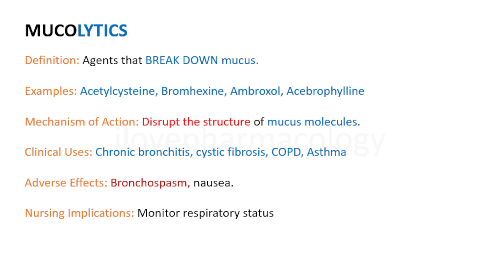Coming to mucolytics — 'muco' means mucus and 'lytic' means breaking down. These are agents which break down the mucus present in bronchial secretions. Examples are acetylcysteine, bromhexine, ambroxol, and acid brophylline. The mechanism of action is that mucolytics disrupt the structure of the mucus molecule, breaking it into smaller molecules. They are useful in treatment of chronic bronchitis, cystic fibrosis, COPD, and bronchial asthma. An adverse effect is that broken-down particles may cause bronchospasm or nausea.